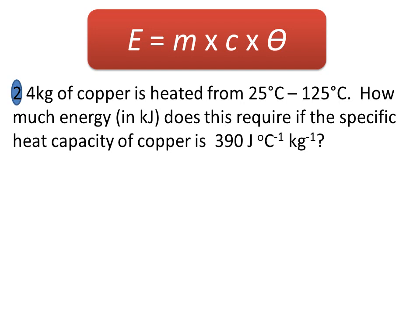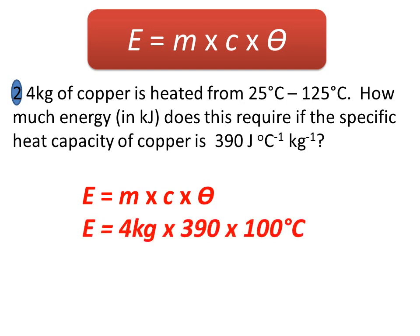Four kilograms of copper is heated from 25°C to 125°C. How much energy does this require if the specific heat capacity of copper is 390? Once again, pretty straightforward. We've got 4 kilograms times 390, and the difference in temperature is 100 degrees centigrade, so times 4 by 390 by 100 will give you 156,000 joules.